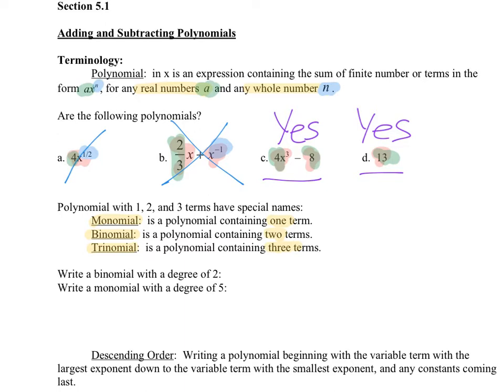Write a binomial with a degree of two. A binomial means two terms; a degree of two means the highest degree is two. So I would have something like 3x squared — the three doesn't matter, you could write just x squared. Then you need one more term, so I could have plus 2x, or plus three, or anything — just one more term that can't have a degree higher than two.